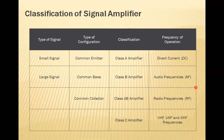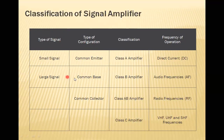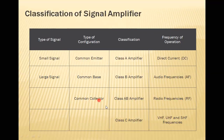Looking at the classification of signal amplifiers by type, configuration, and frequency: a small signal in common emitter configuration is a Class A amplifier operating at direct current. Common base configuration is Class B, used for audio frequencies. Common collector is Class AB, operating at radio frequency. Another common collector configuration is Class C, operating at very high frequency, ultra high frequency, and standard high frequencies.